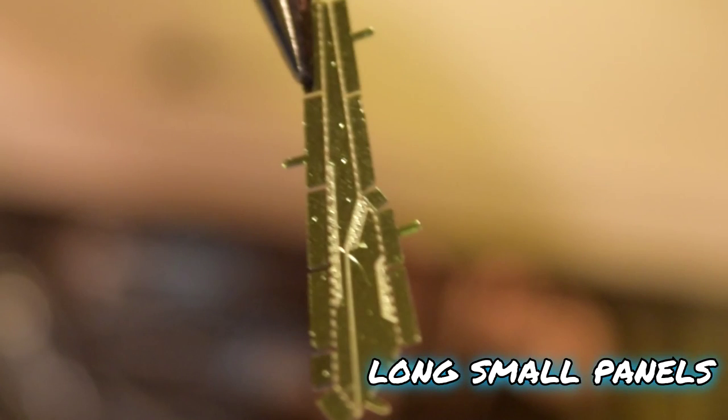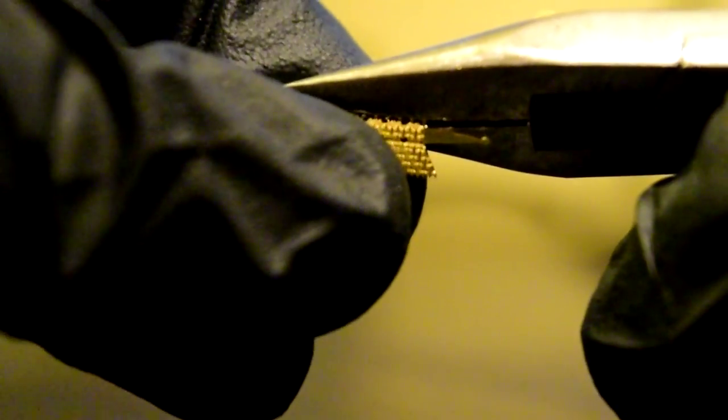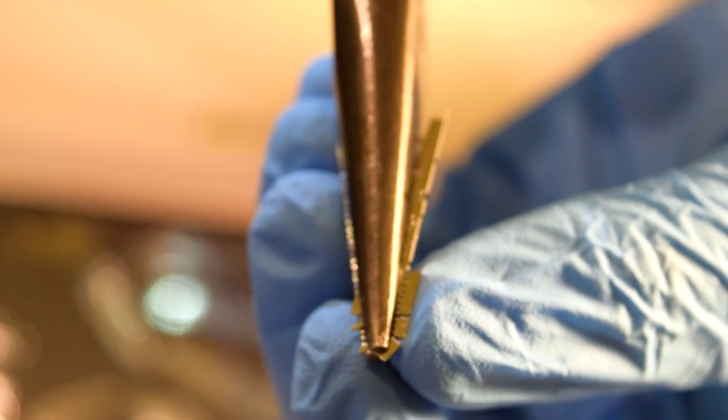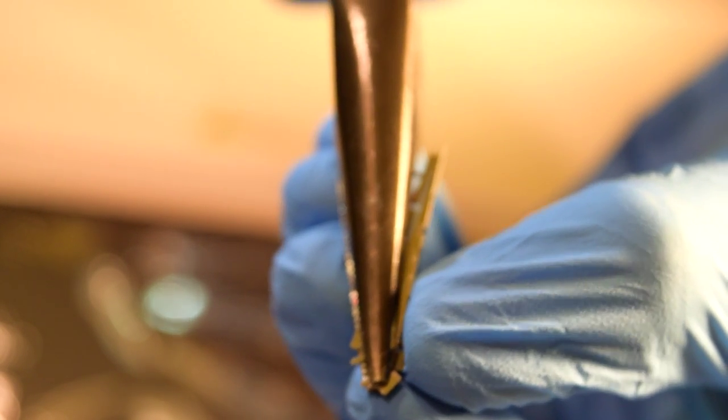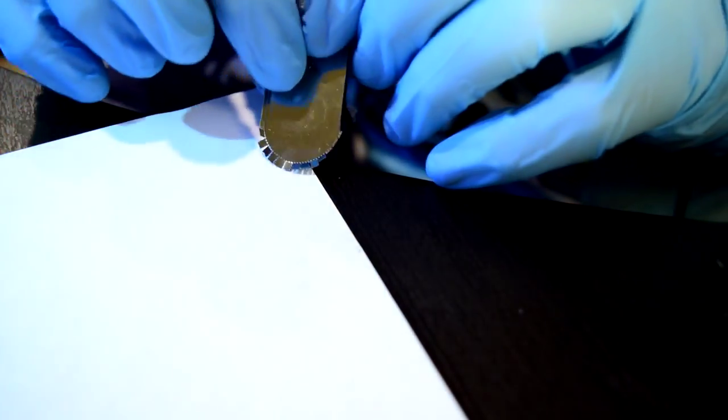Long, small panels. You want to line up your pliers with the dotted line. Press down on the larger panel. Well, you want to apply even pressure with your fingers across the whole thing so one side doesn't get warped. You could do it this way too. Or use the table.